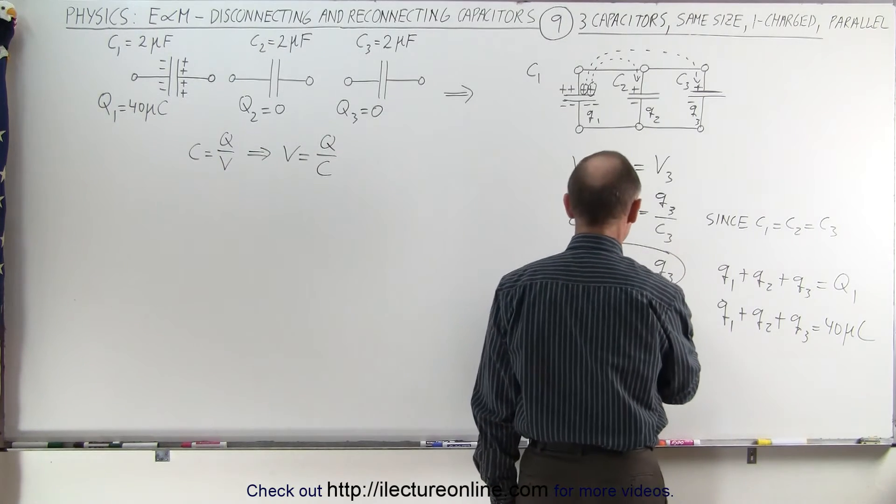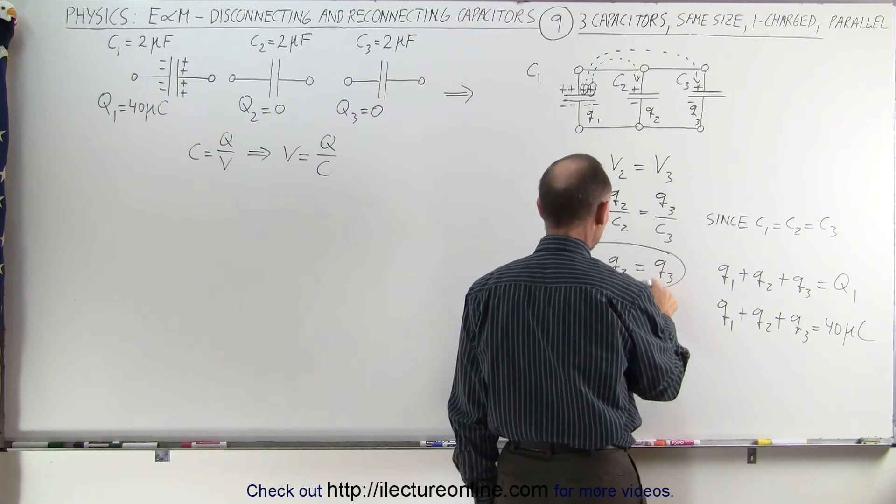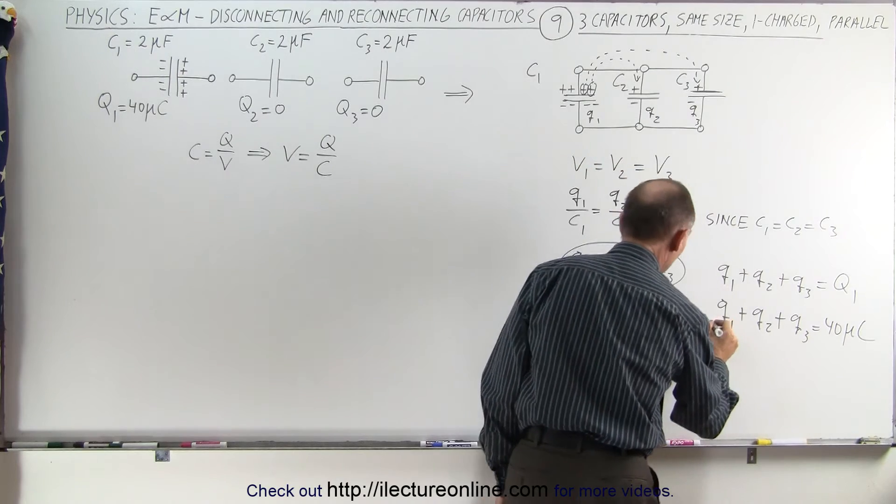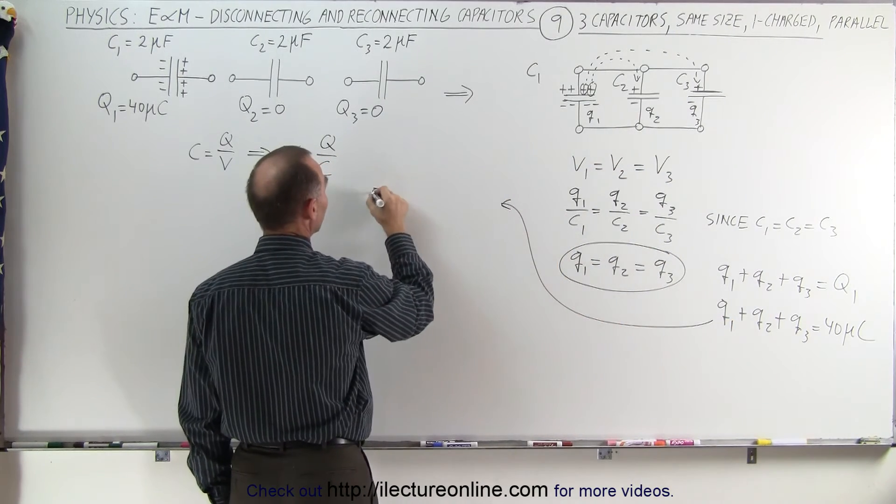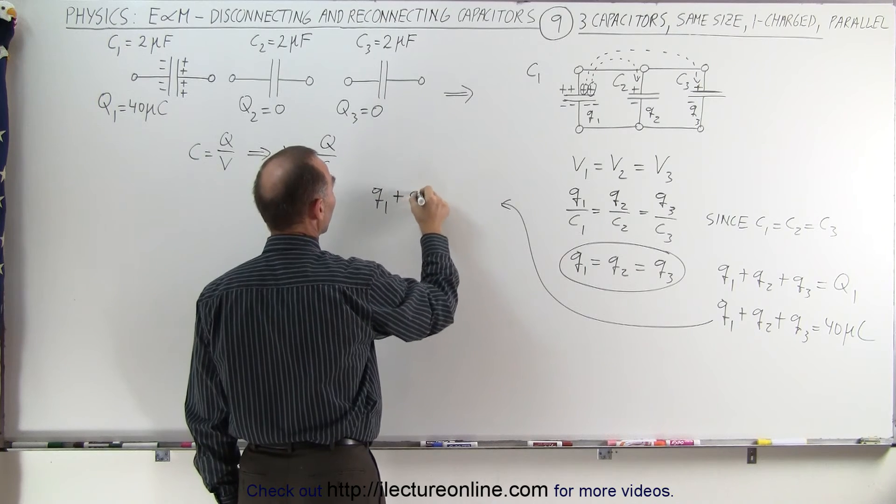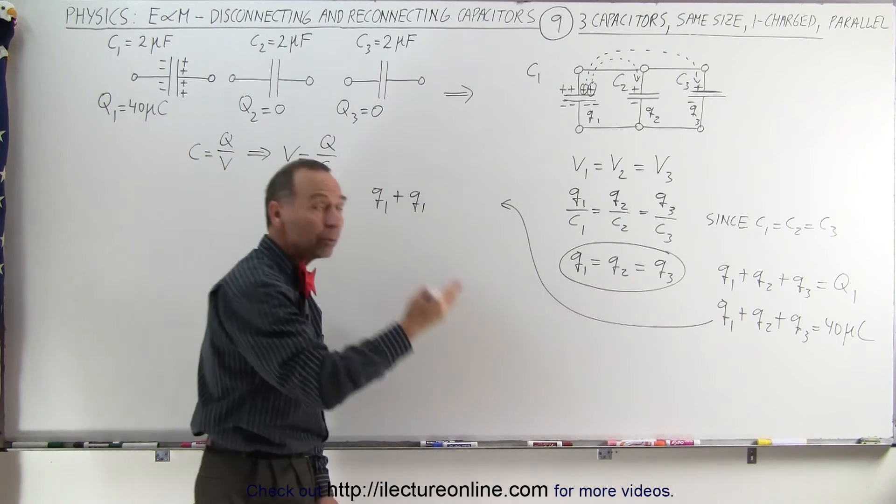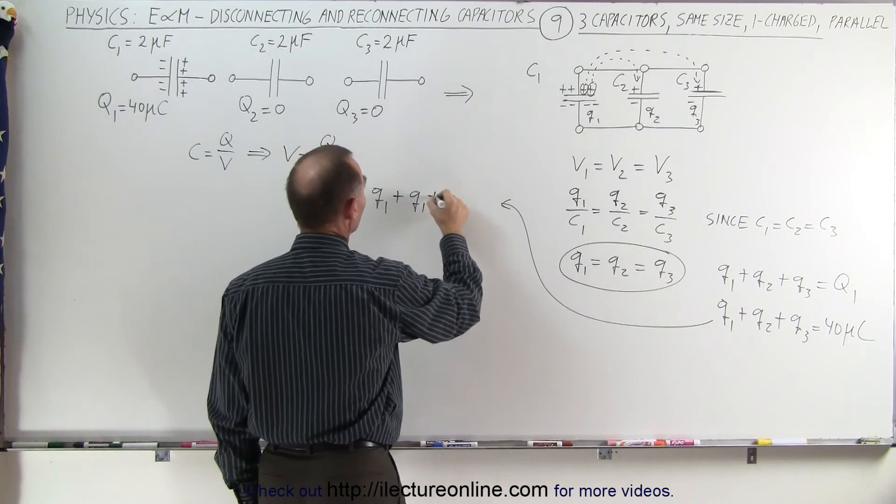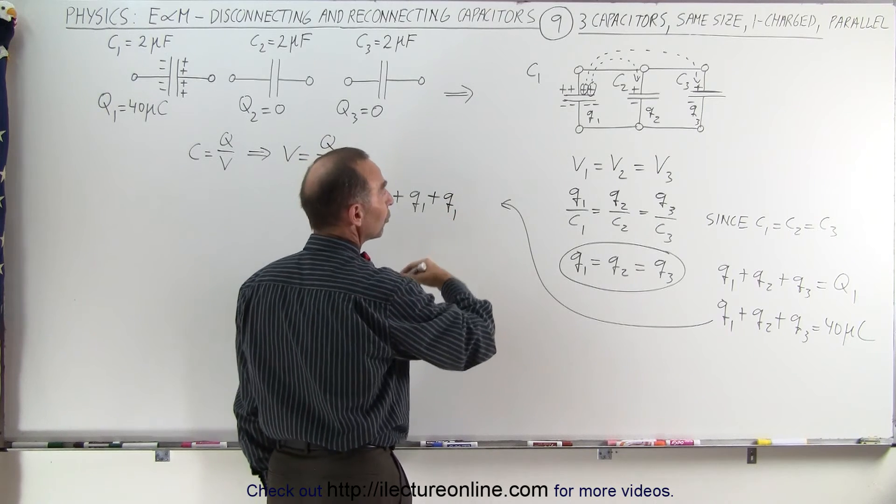If Q2 is equal to Q1 and Q3 is equal to Q1, we can take this equation and write it as follows: Q1 plus Q1 (since Q2 equals Q1) plus Q1 (since Q3 equals Q1), and set that equal to 40.